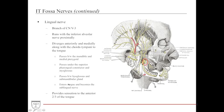The lingual nerve also passes through the infratemporal fossa. It is a branch of cranial nerve V3, the mandibular nerve. It runs with the inferior alveolar nerve proximally, then splits off to go into the tongue. It diverges anteriorly along with the chorda tympani to provide innervation to the tongue. It passes between the mandible and the medial pterygoid, and under the superior pharyngeal constrictor and styloglossus.